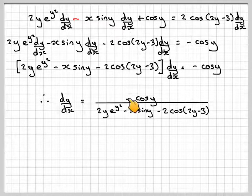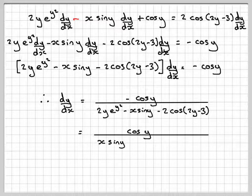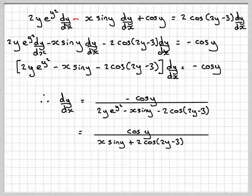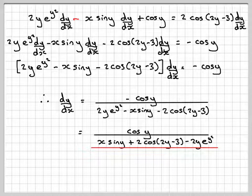Now we could take that minus sign down here. So we end up with cos y over x sine y plus 2 cos 2y minus 3 minus 2y e to the y squared.